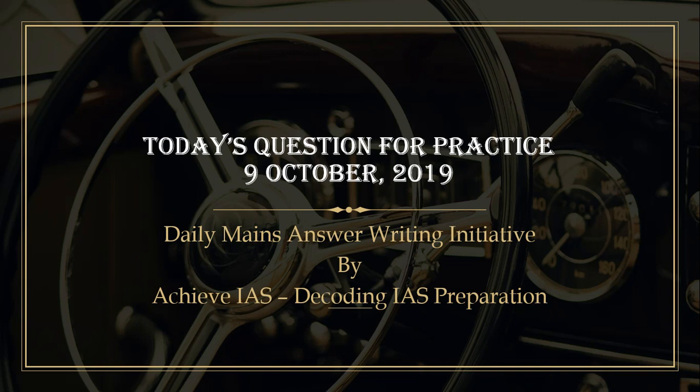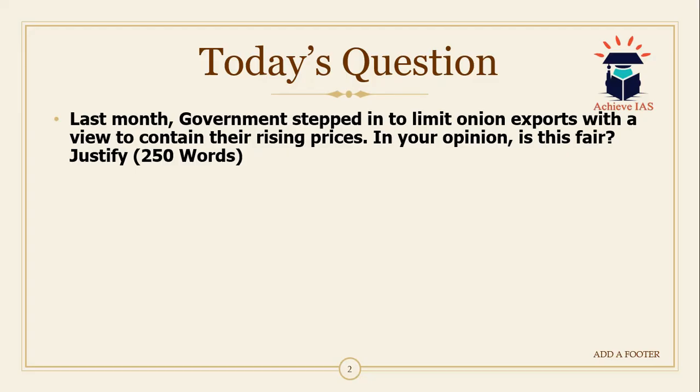In this video we will be talking about our main answer writing series. Today's question is: last month the government stepped in to limit onion exports with a view to contain their rising prices. In your opinion, is this fair and justified? You have to justify whether the government's decision was fair or not, giving a balanced opinion on both sides of the coin.